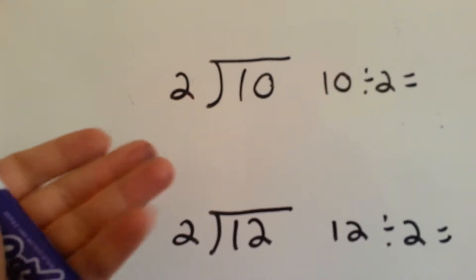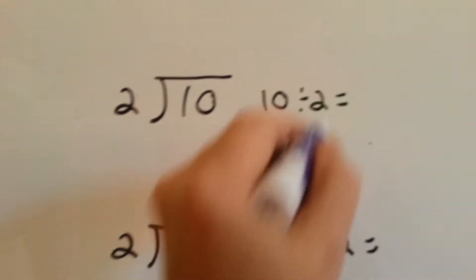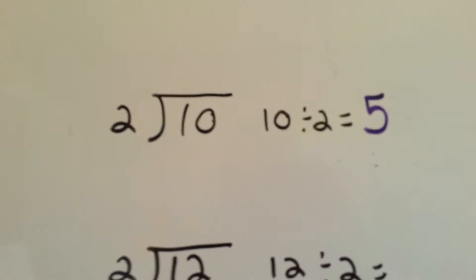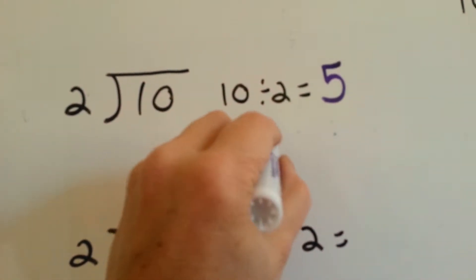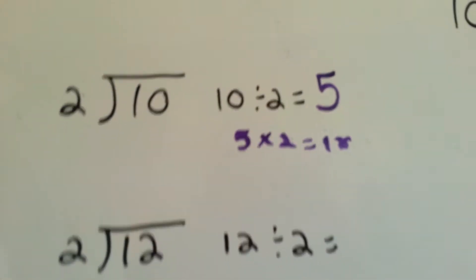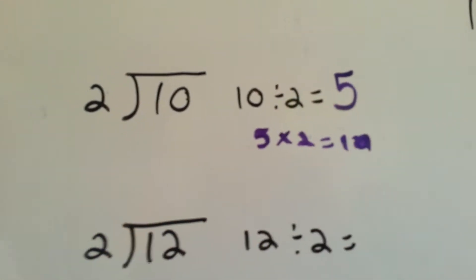2, 4, 6, 8, 10. We used 5. So 10 divided by 2 is 5. You know why? Because 5 times 2 equals 10. So we can do the inverse and help us do that. See?